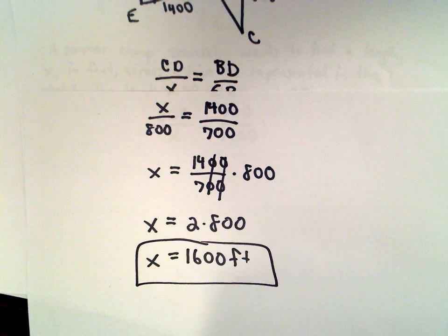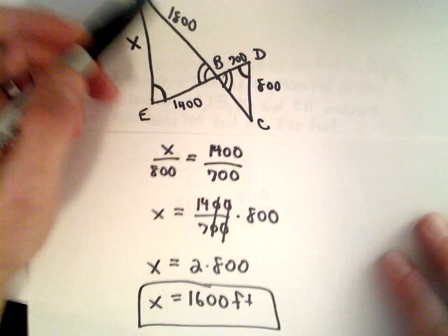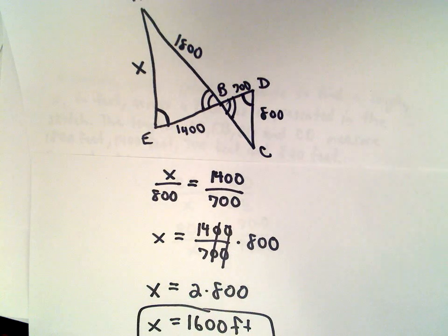So again, the idea in this one is just recognizing that these two triangles are in fact similar, and then setting up the correct proportions.